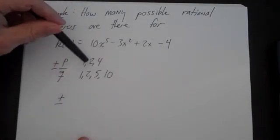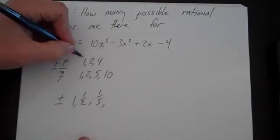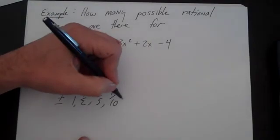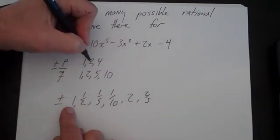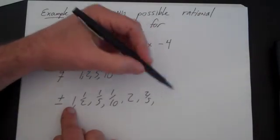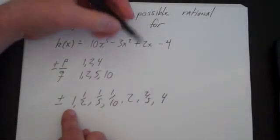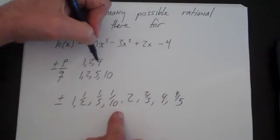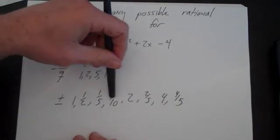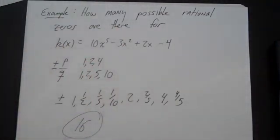Starting with P = 1: 1/1, 1/2, 1/5, 1/10. Then P = 2: 2/1, 2/2 is 1 so skip, 2/5, 2/10 is 1/5 so skip. Then P = 4: 4/1, 4/2 is 2 so skip, 4/5, 4/10 is 2/5 so skip. That gives 8 unique values, and with plus and minus that's 16 candidates for rational zeros.